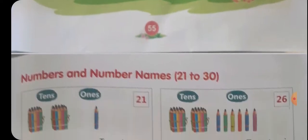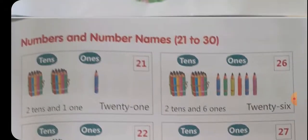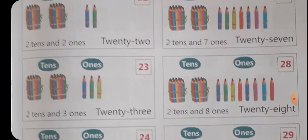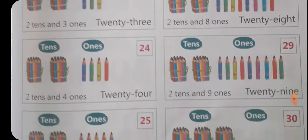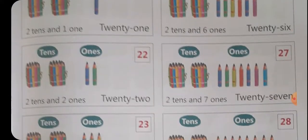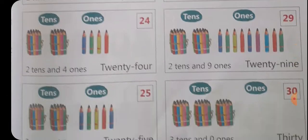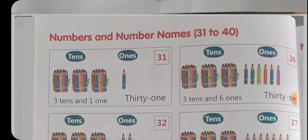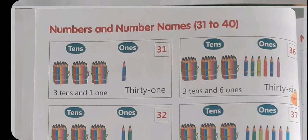Next is Numbers and Number Names 21 to 30. Numbers दे रखे हैं 21 to 30 और उनके Number Names दे रखे हैं। 31 to 40 तक दे रखे हैं।